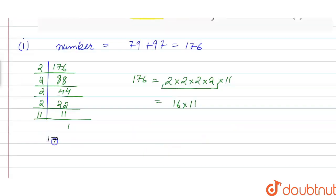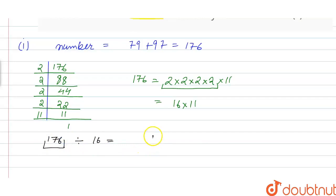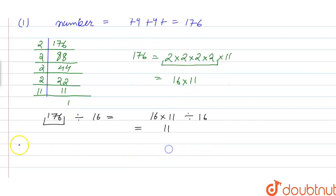Solving the question: 176 divided by 16 is equal to — we can write 176 as 16 × 11, divided by 16. So the quotient will be equal to 11.